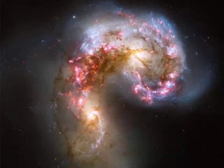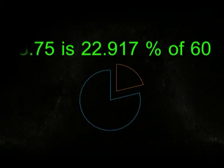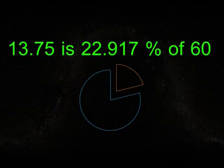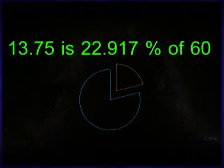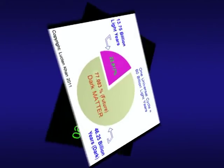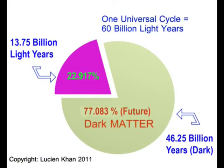Physicists also claim that we can only see roughly 25% of our entire universe and that the rest is made up of dark energy and dark matter. Here is an interesting calculation. 13.75 is 22.917% of 60.